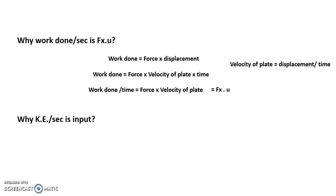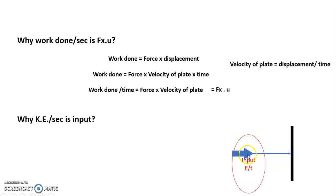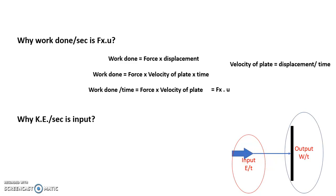Let us understand why kinetic energy per second is always considered the input. Going with the theory of a nozzle, a jet, and a moving plate: the input is always related to the jet issuing from the nozzle, and it is considered under its kinetic energy. So energy per time is the input, and work done per second is the output — the kinetic energy issuing from the nozzle per second.